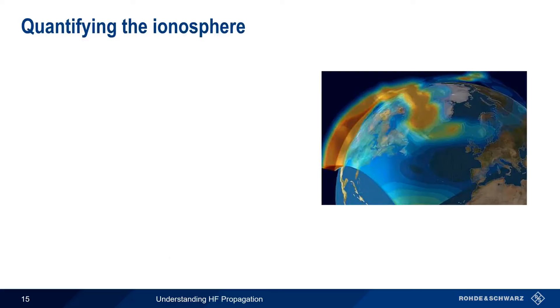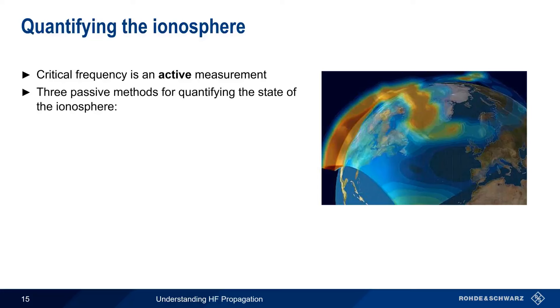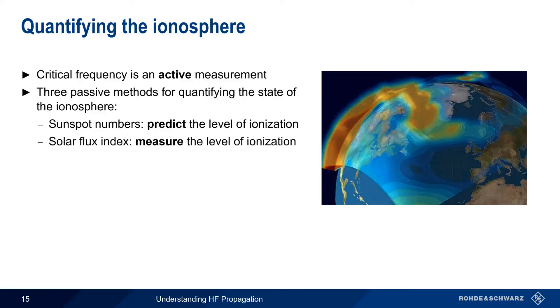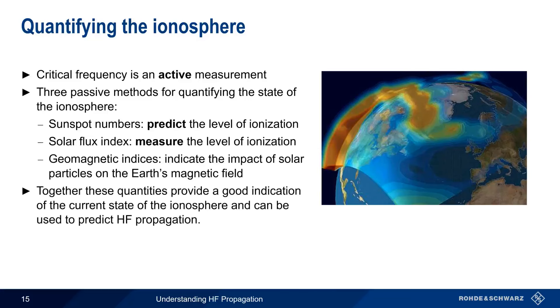Critical frequency is one way of quantifying the state of the ionosphere, but it is an active test. We transmit signals and measure the return signals. In addition to critical frequency, there are three common passive methods that can be used to quantify the state of the ionosphere. The first of these is sunspot number, which can be used to predict the level of atmospheric ionization. The second is the solar flux index, which is an actual measurement of ionization. There are also two geomagnetic indices, the A index and the K index, which give an indication of the impact of solar particles on the Earth's magnetic field. Taken together, these quantities provide a good indication of the current state of the ionosphere and can be used to predict HF propagation. Let's take a look at each of these three quantities in a bit more detail.